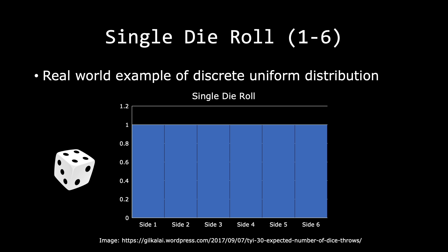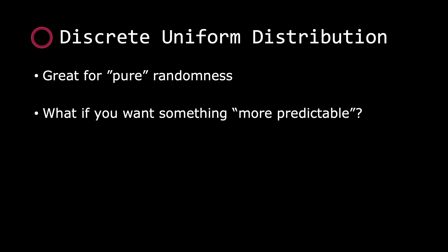A real world example would be a single six-sided die roll. Because it is uniform, the probability of rolling any value between one and six is equal — one divided by N. To summarize, the discrete uniform distribution is great when you want pure, unpredictable randomness.